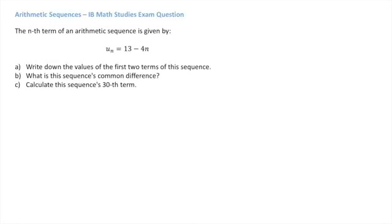To write down the first two terms of this sequence, we use the given formula. We're told that un, the nth term, equals 13 - 4n. The first term corresponds to the case where n = 1. So replacing n by 1 in this formula, we find the first term: u1 = 13 - 4(1). That leads us to u1 = 13 - 4. Finally, u1 = 9.